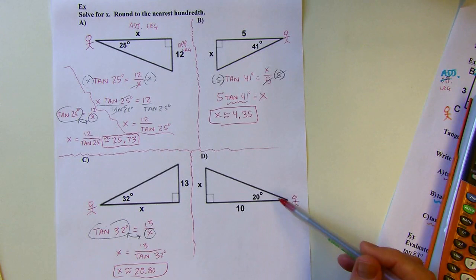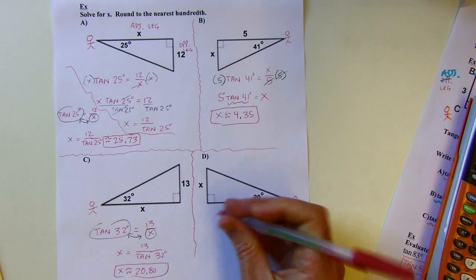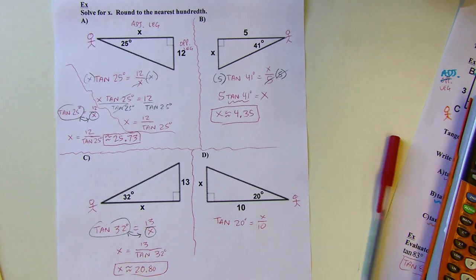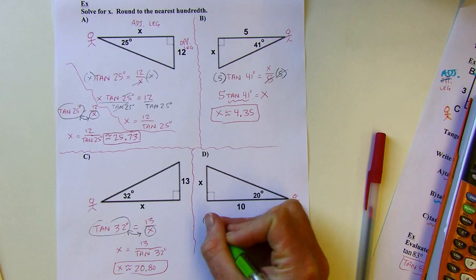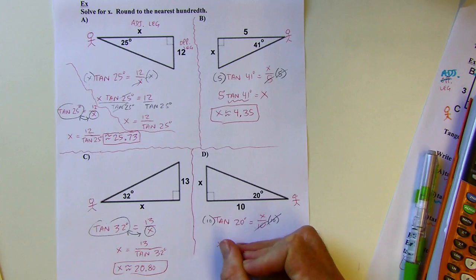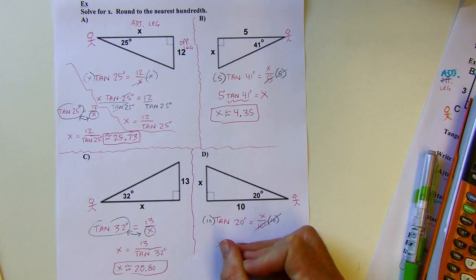Opposite and adjacent: tangent of 20 degrees equals x over 10. I don't want the Incredible Switch here because it's not going to isolate x. Instead I'll multiply both sides by 10. If you needed the exact value, there it is — 10 times the tangent of 20 degrees. And then approximately 3.64 to the nearest hundredth.